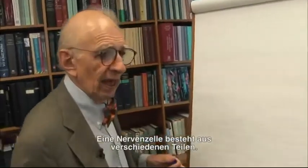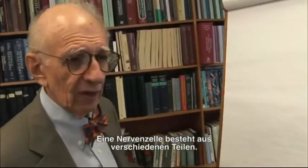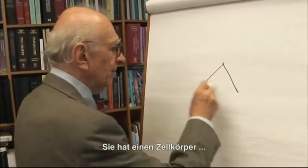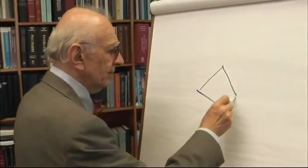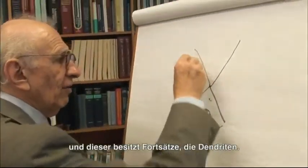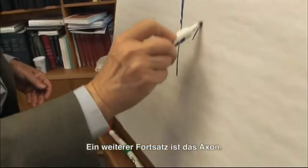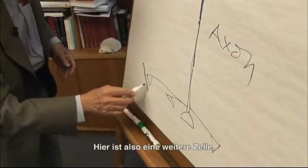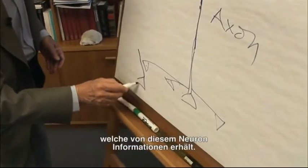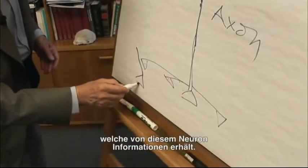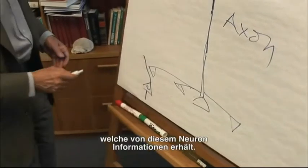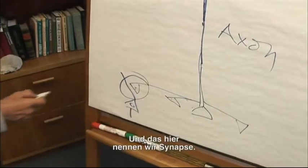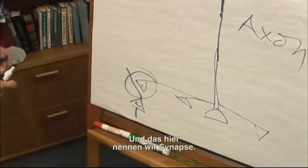The nerve cell has several different components. It has a cell body, and it has extensions called dendrites. There is another process called the axon. This cell communicates with other cells — here's another cell that receives information from this neuron, and we call this the synapse.